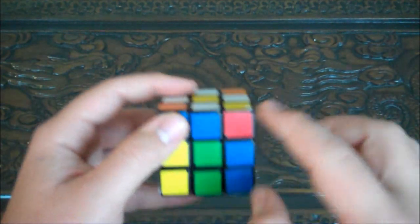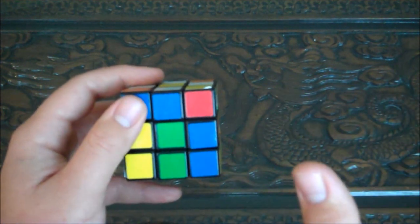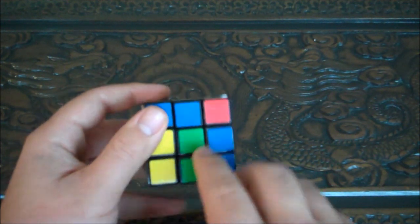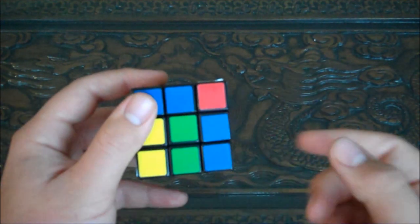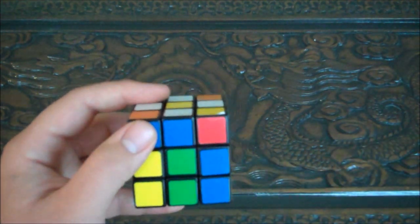Now we want to match these pieces with their correct sides. You can tell the sides by the color of the middle piece. So this middle piece is green, so this is going to be the green side. The reason is, you can't move the middle piece. It's always there.